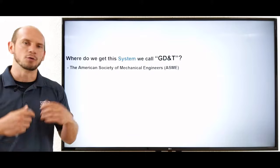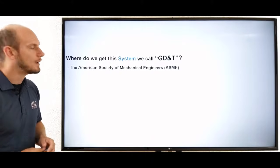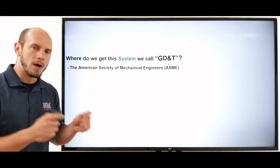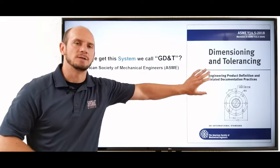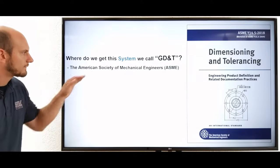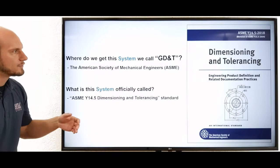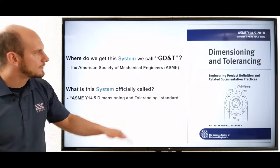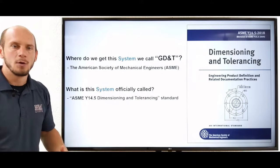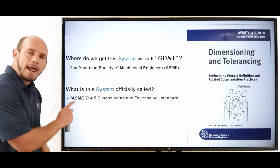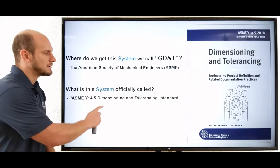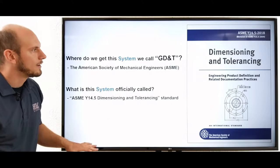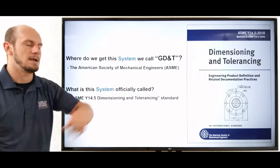So where do we get this agreed upon system that we call GD&T? Well, we get it from the American Society of Mechanical Engineers, or ASME. They published this system as a standard, which you see right here. All right, so we get it from them. It's a standard, but you'll notice on this standard that you don't see the term GD&T anywhere. How come? Well, turns out GD&T is actually a slang term for this official title, which is called ASME Y14.5 Dimensioning and Tolerancing. So this thing we've been hearing about called GD&T is really slang for this standard right here from the American Society of Mechanical Engineers.